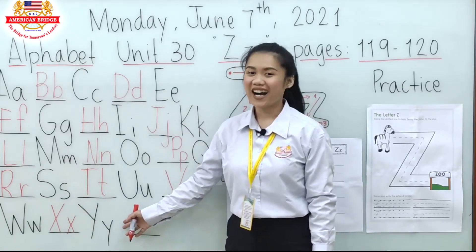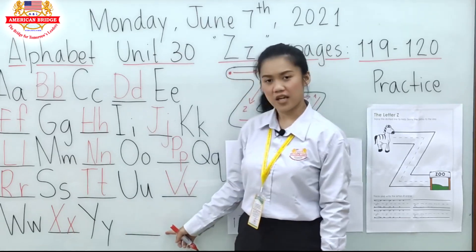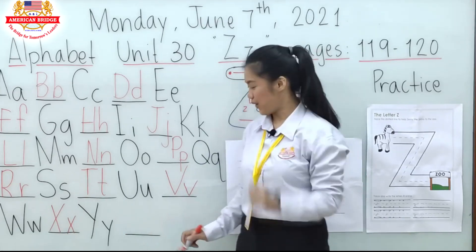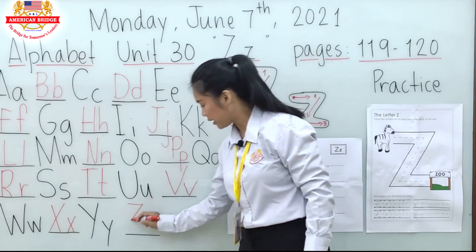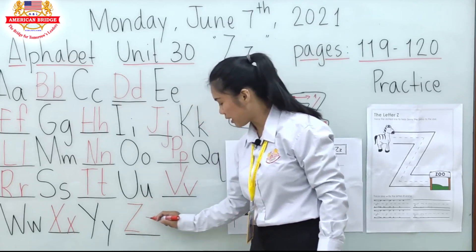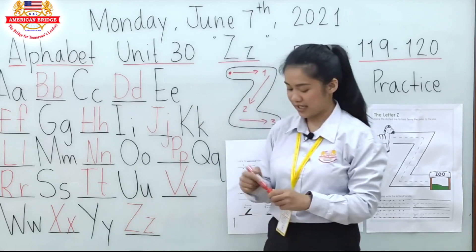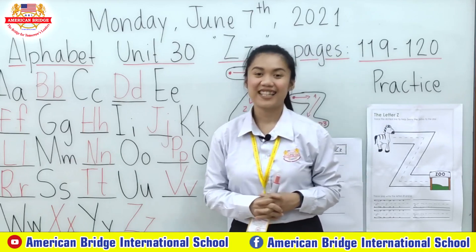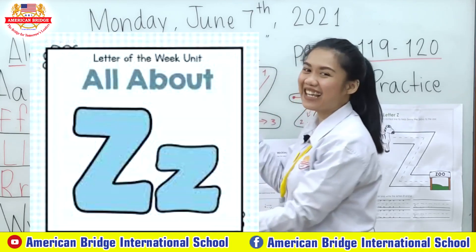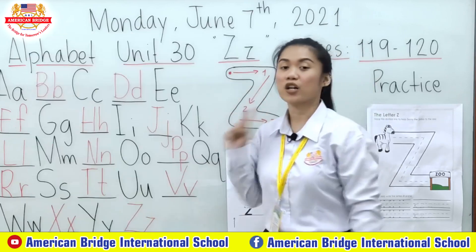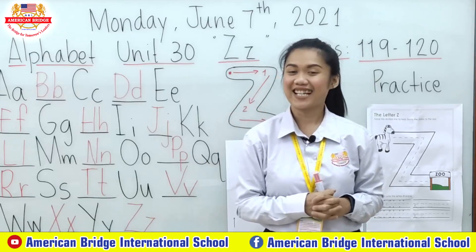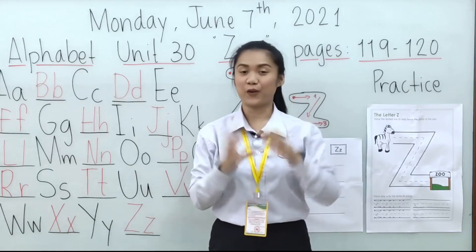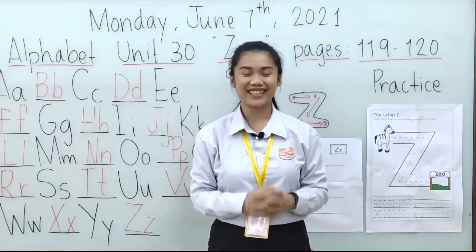Next is Letter Y — our previous lesson! And how about this last one? Letter Z — very good everyone! So let's complete this letter: capital Z and small letter Z. Now we are going to talk about Letter Z everyone, and this will be our topic for the whole week. It's time for our break — I'll see you again later, goodbye!